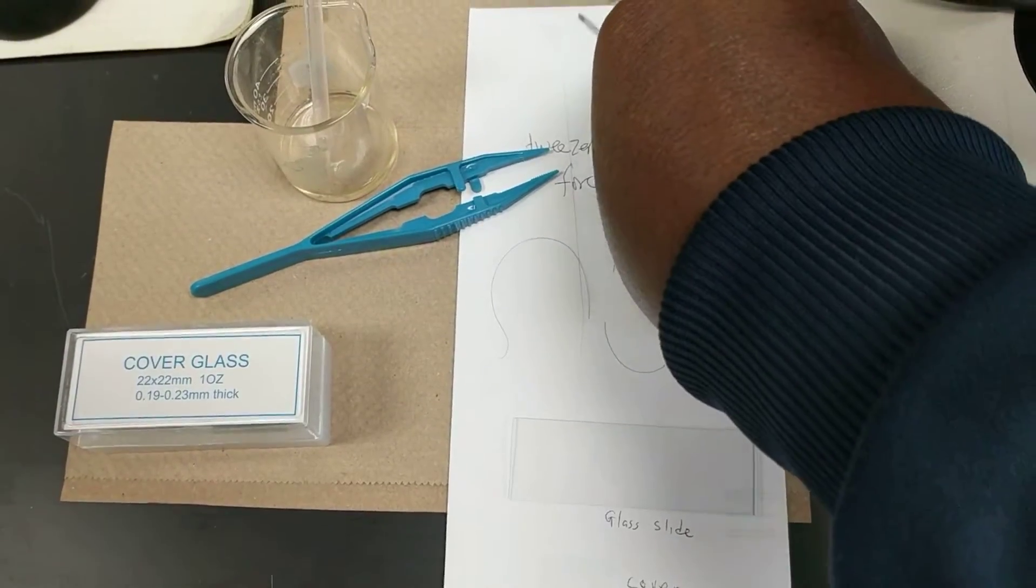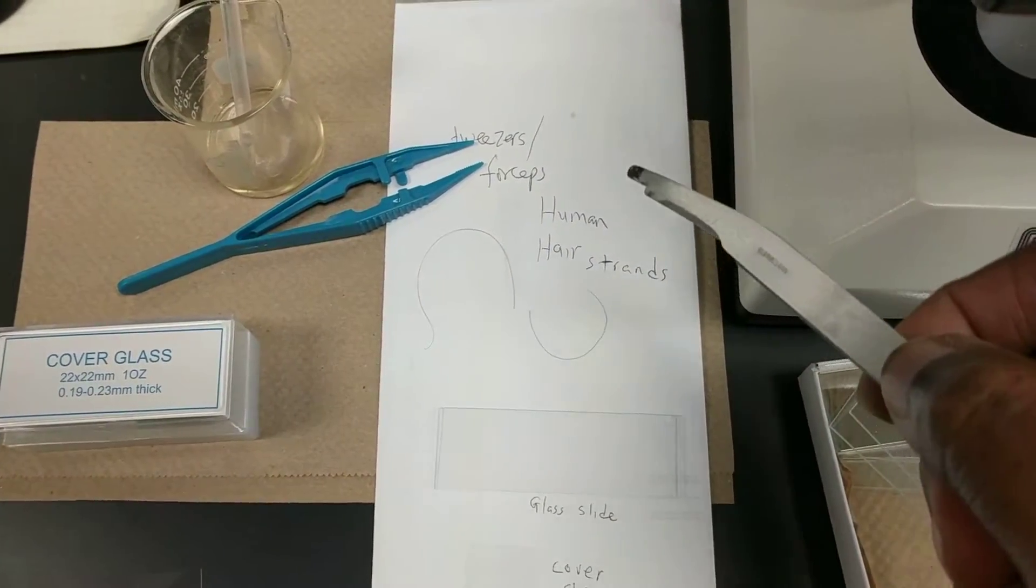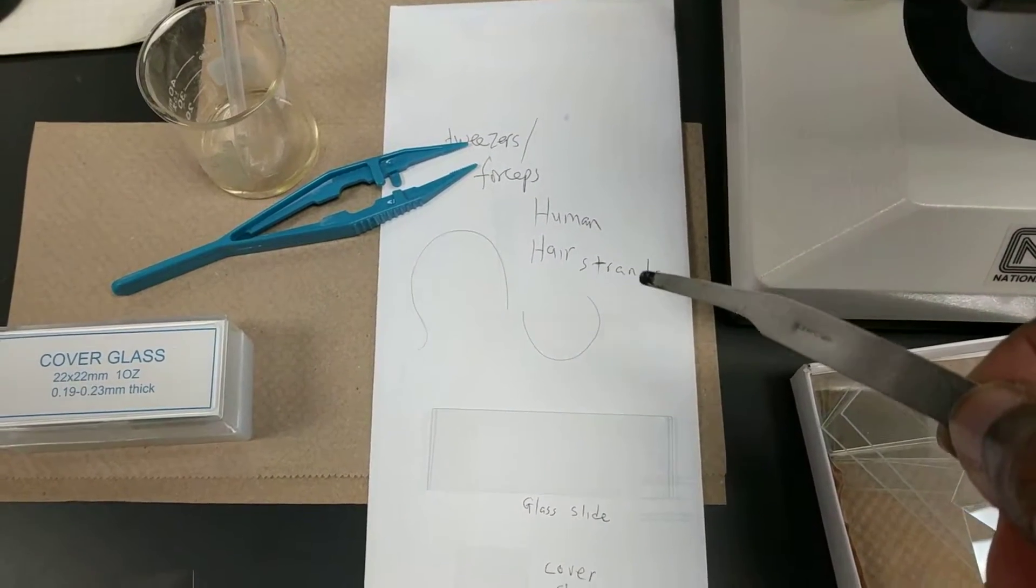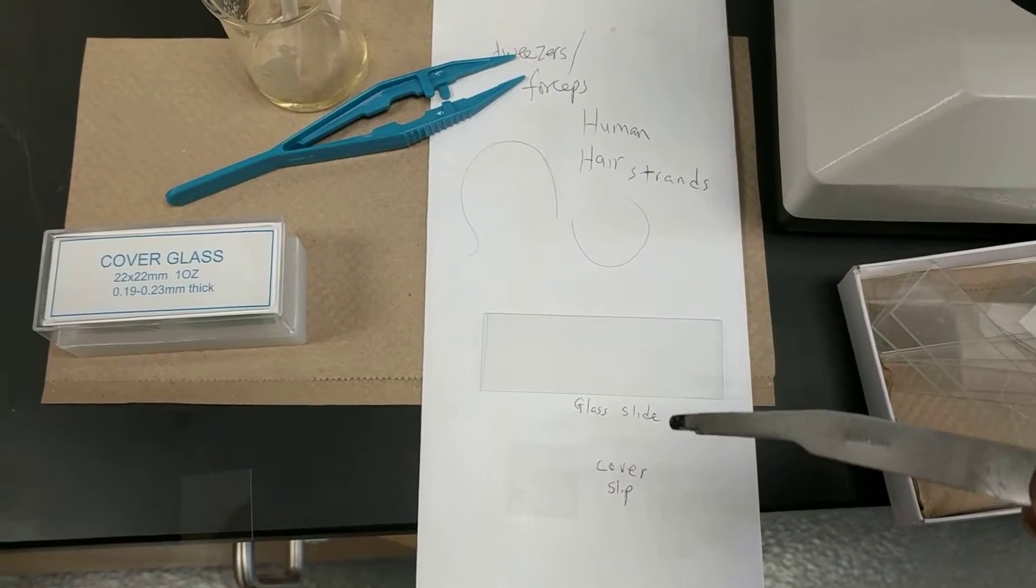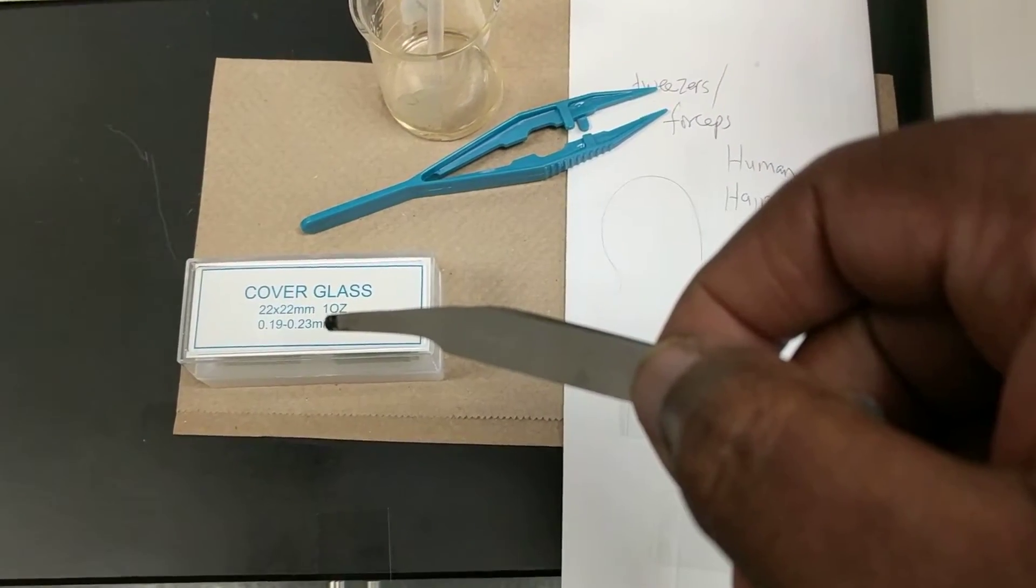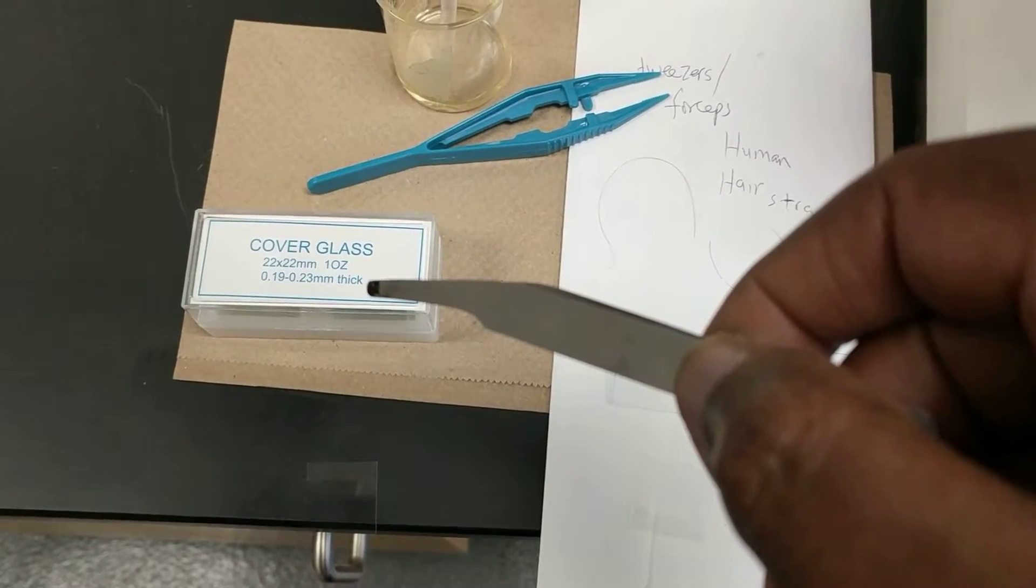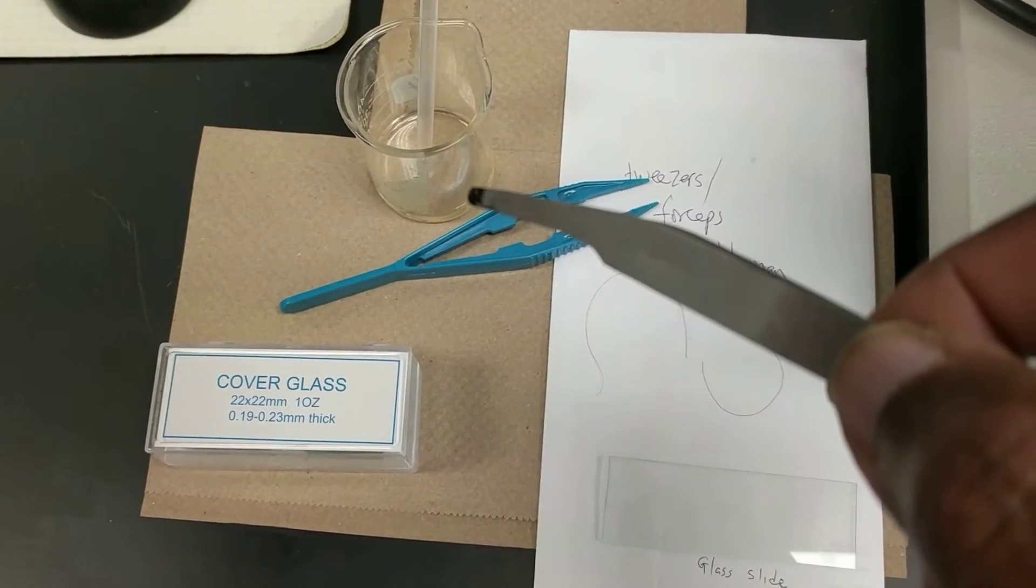What you need would be a tweezer or forceps, human hair strand. You take just one glass-like cover slip. The cover slips are kept in this container. They're also called cover glass, and this is the drop of oil.